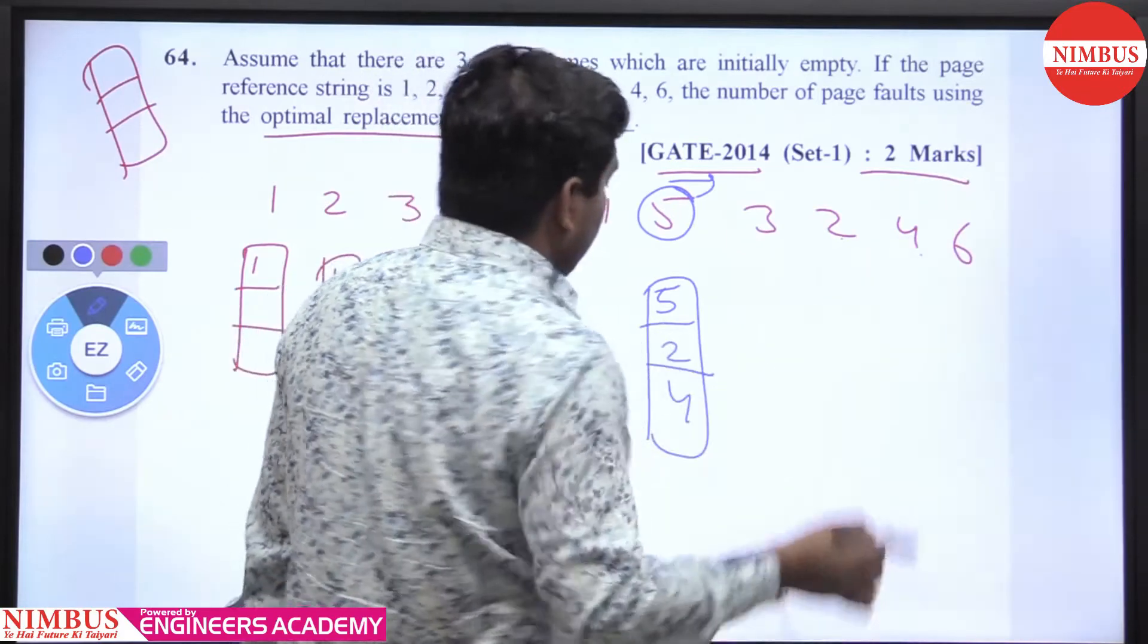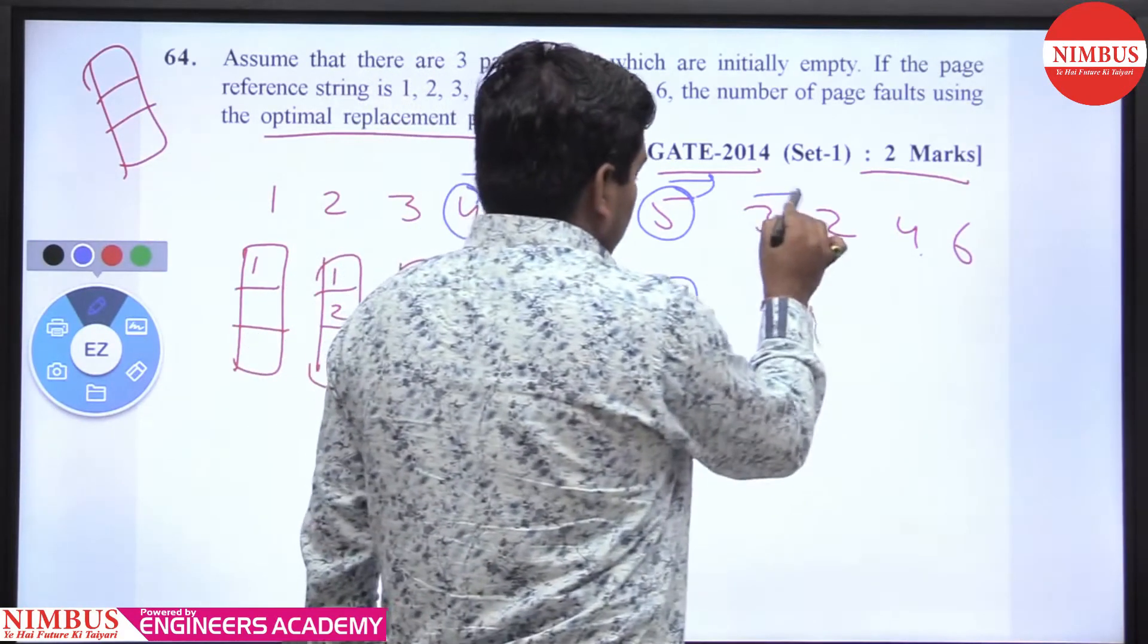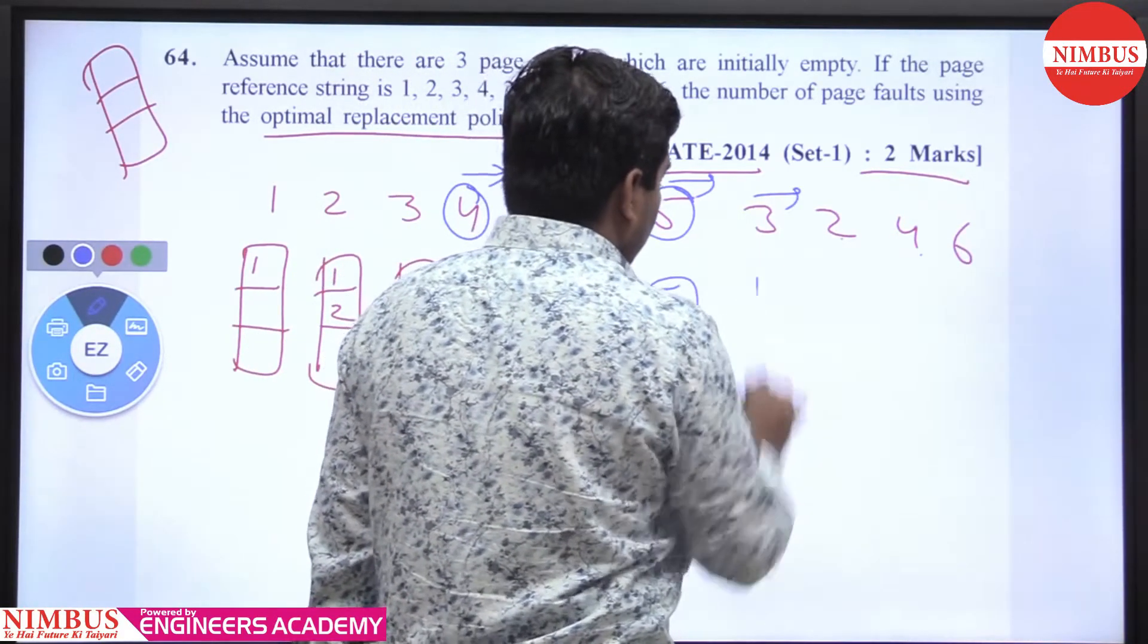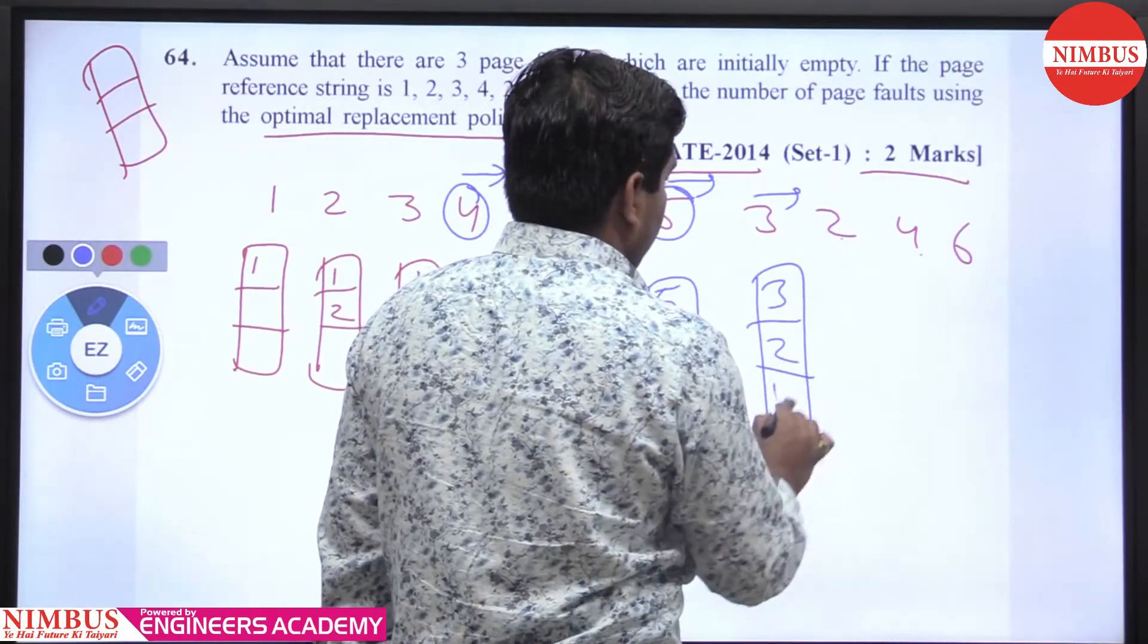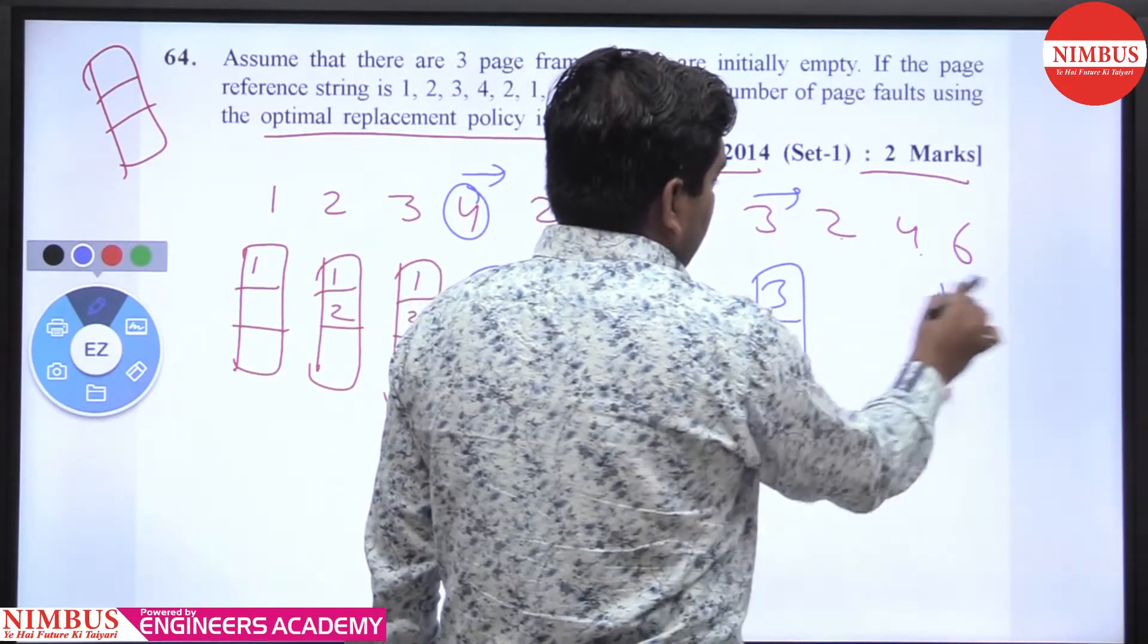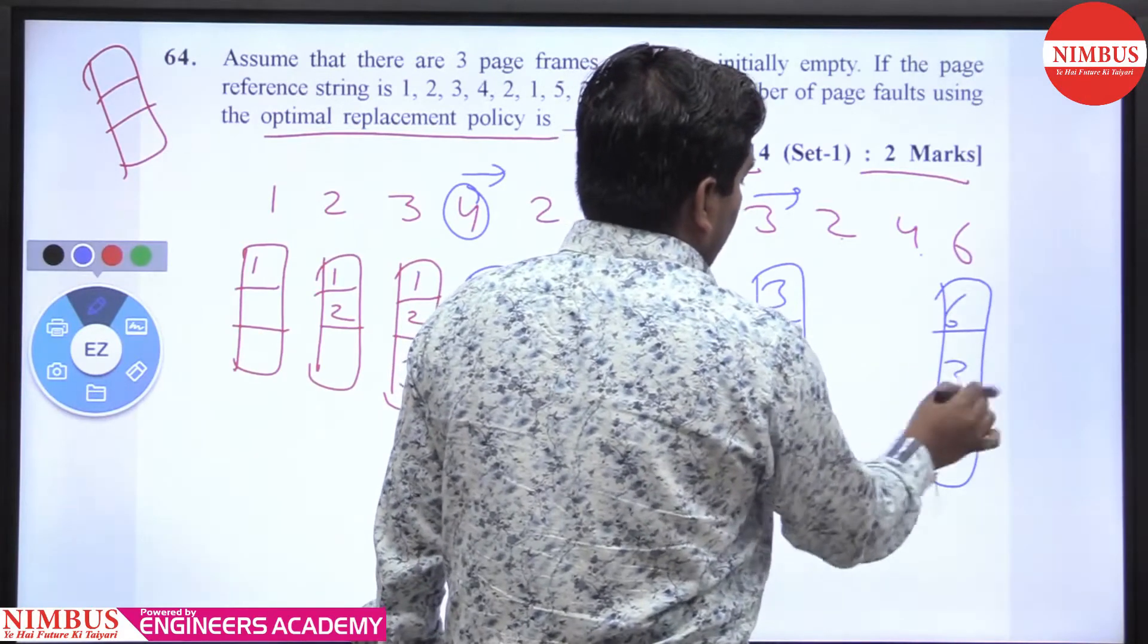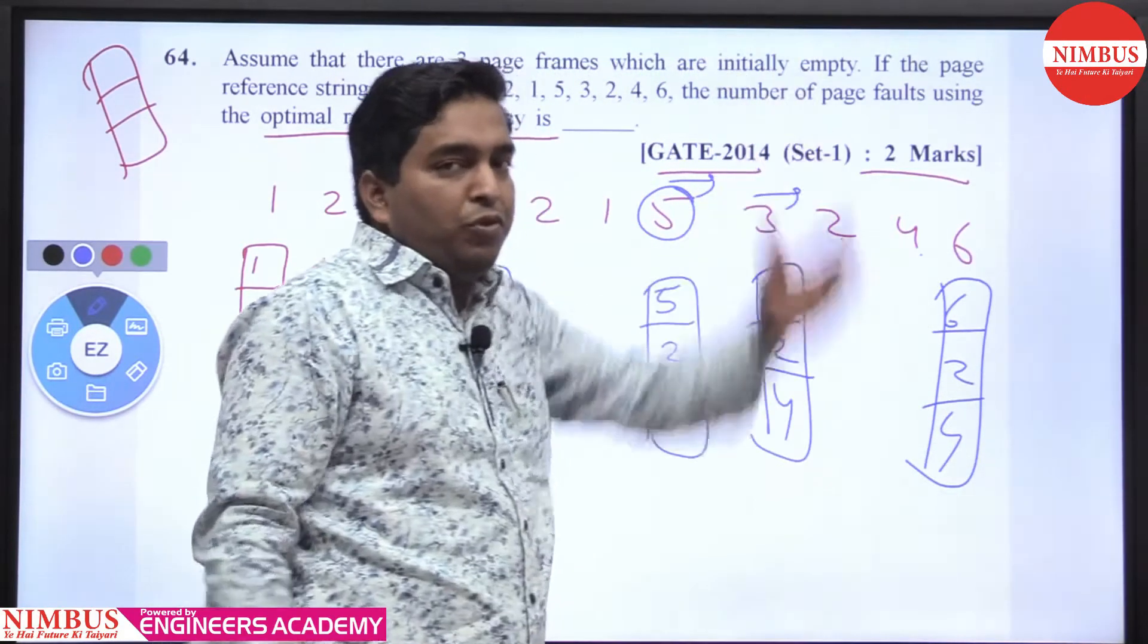At 3, there's a page fault. You will see 5, 2, 4, 2, 4 - then 5 is replaced by 3. Now we have 3, 2, 4. At 6, you can replace any arbitrary page because there's no future string.